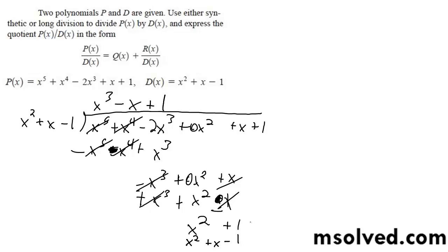Cancel out, and we end up getting our final solution: x squared minus x plus one, plus the remainder of negative x plus two over x squared plus x minus one. That's it.